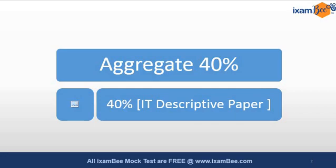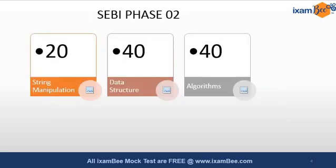When you look at the syllabus of SEBI Phase 2, there are 3 pillars: string manipulation, data structures, and algorithms. The breakup for each portion is string manipulation at 20%, data structures at 40%, and algorithms at 40%. You will have 5 questions categorized into different mark groups.